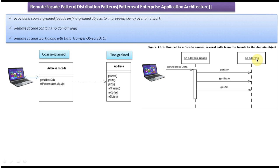Suppose the client wants to set the address information. Then the client has to make a call to the set address method by passing street, city, and zip. This method will in turn call setter methods of the address domain object, like set street, set city, and set zip, to set those values.